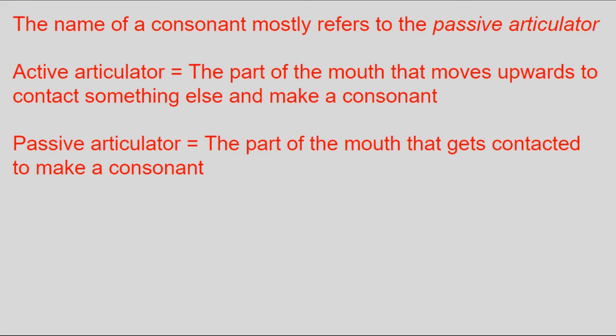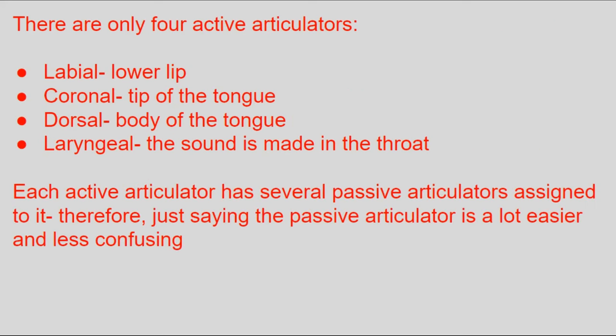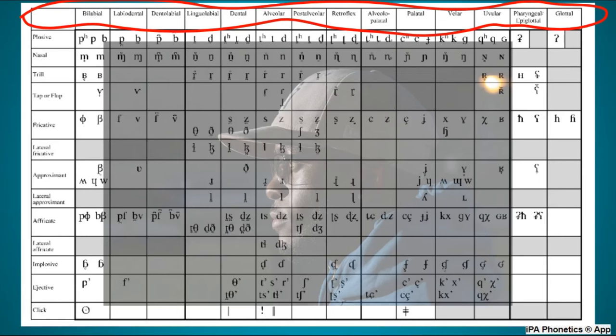There are only four active articulators, and each has several passive articulators assigned to it, so just saying the passive articulator is more concise. The places of articulation are listed across the top of the consonant chart and represent the columns, with the front of the mouth on the left — the same directionality as on the vowel chart.